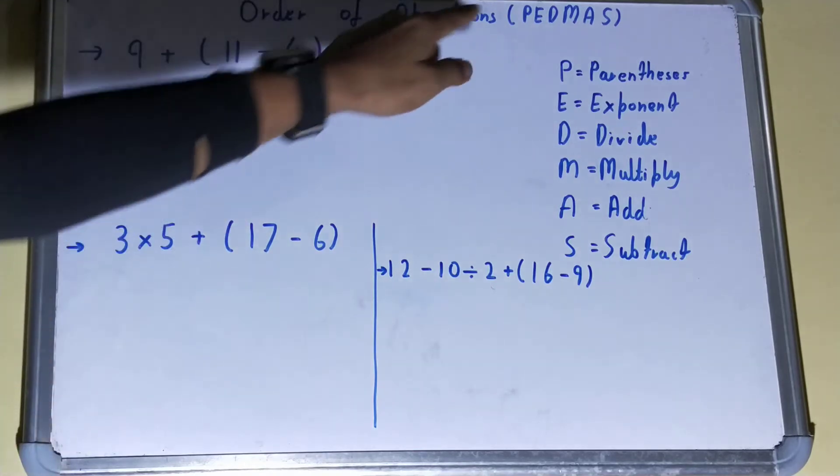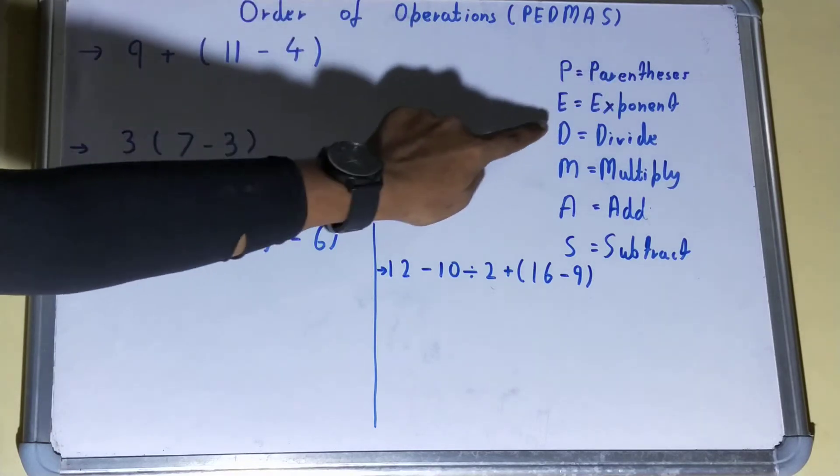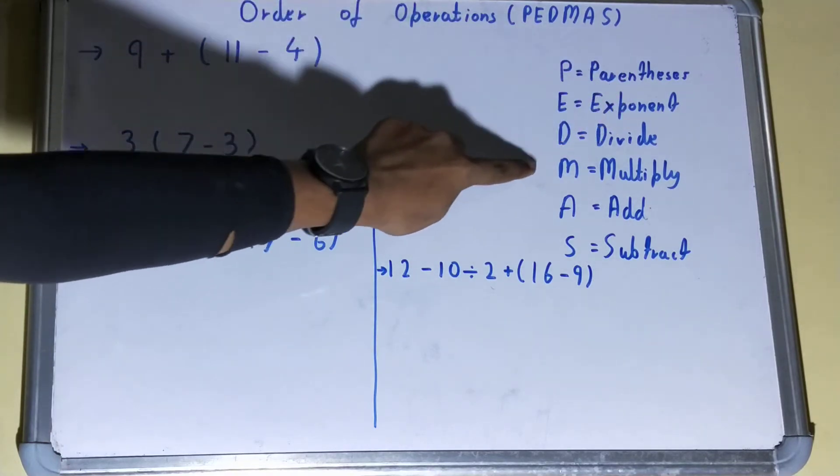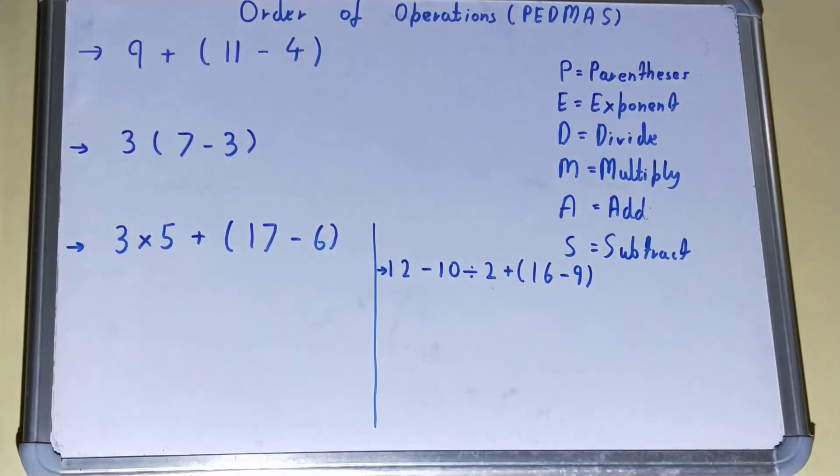P means Parenthesis, then you'll be solving the Exponent, then you'll be solving the Divide, then you'll be solving the Multiply, then Addition, and at last the Subtraction. That is the order of operations you need to apply on the equations or the problems we are given.